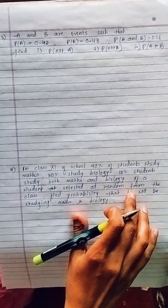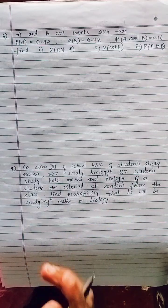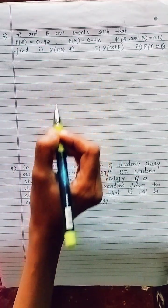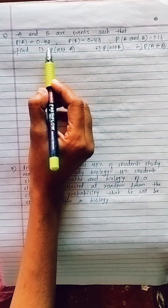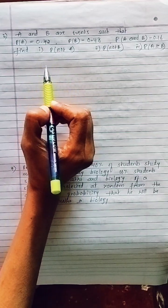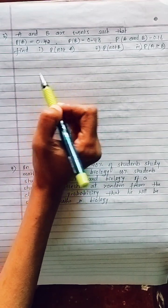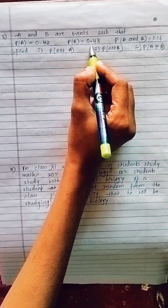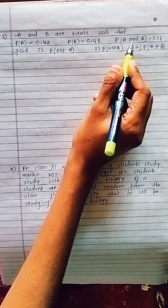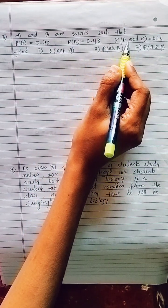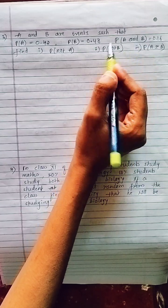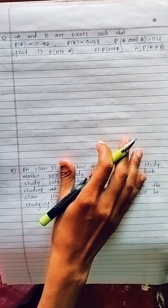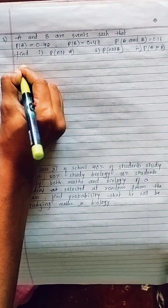The next question: A and B are events such that P(A) = 0.42, P(B) = 0.48, and P(A and B) = 0.16. We have to find P(not A), P(not B), and P(A or B).